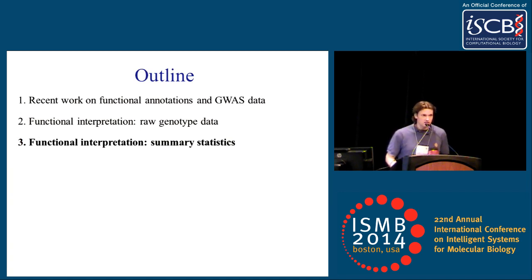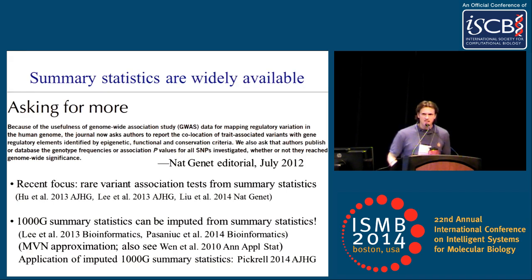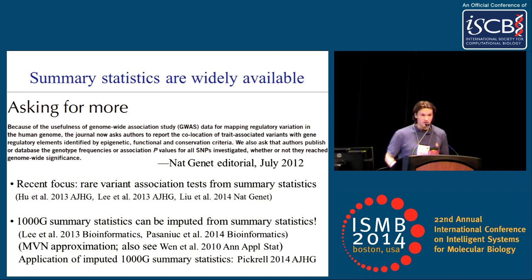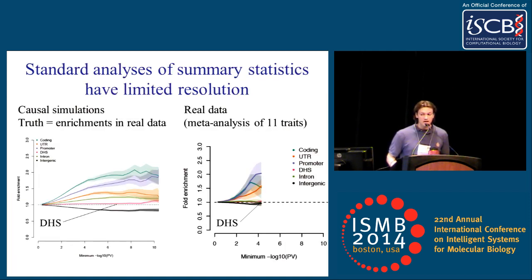In the limited time I have left, I'd like to switch gears and talk about what if the input you're analyzing is not raw genotype data, but instead summary association statistics. Why the focus on summary statistics? Mainly because they're very widely available — a 2012 Nature Genetics editorial decreed that anybody publishing a GWAS must publicly release summary association statistics. A secondary reason is that as datasets get sufficiently large, maybe up to 100,000 samples, variance components analysis can start to become computationally intractable, so summary statistics may be more appealing.